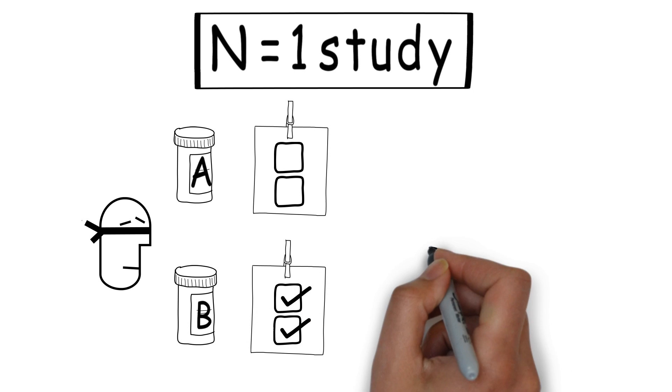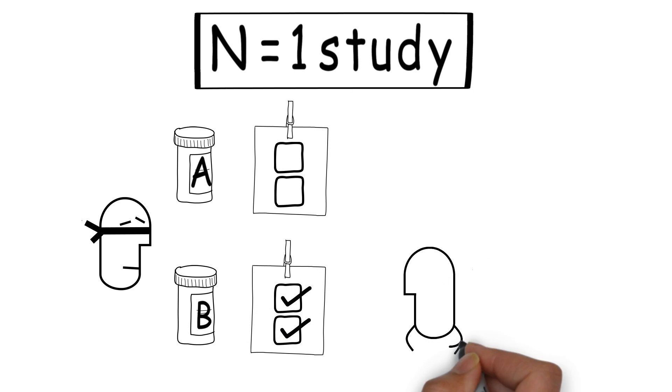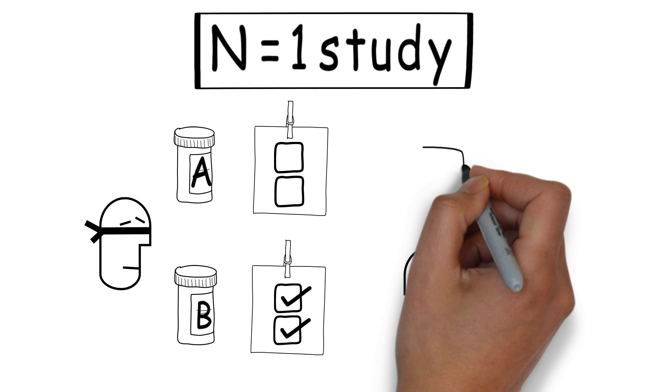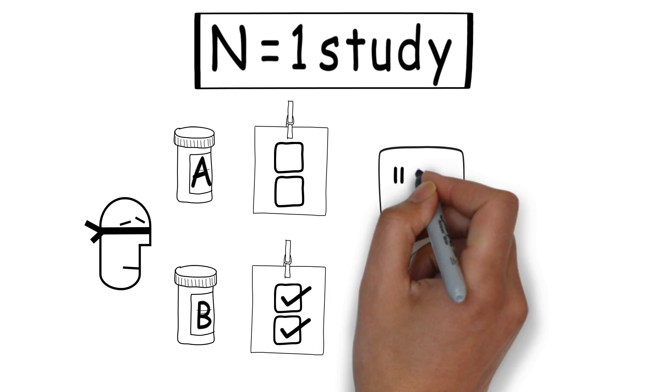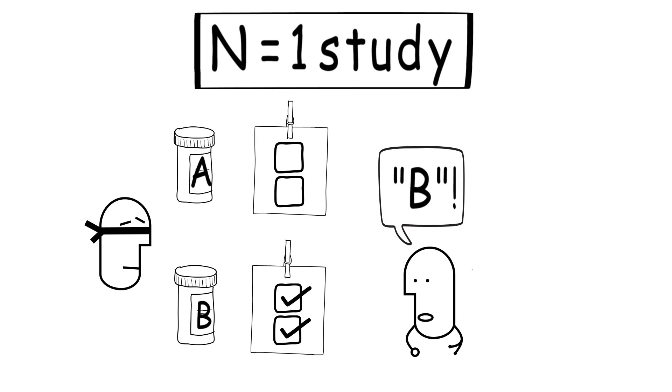It's important that whoever is measuring these variables is also blinded to the therapeutic option the patient is receiving. Again, we want to avoid bias in our study. After we've collated our results, we can then sort out did the patient do better when they were getting therapy A or therapy B, and we'll know for that specific patient what is the best therapeutic option.